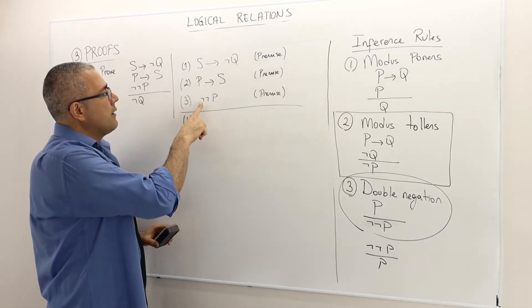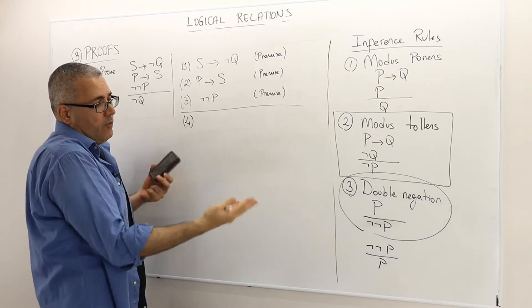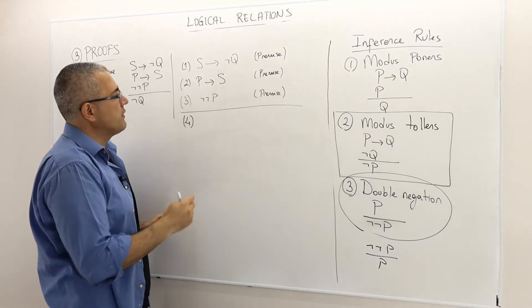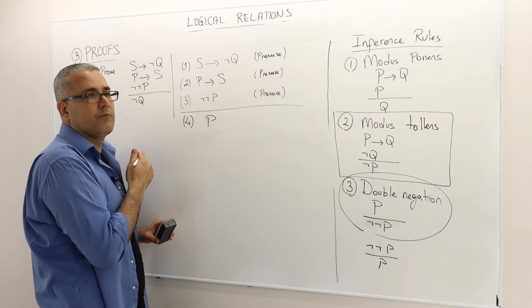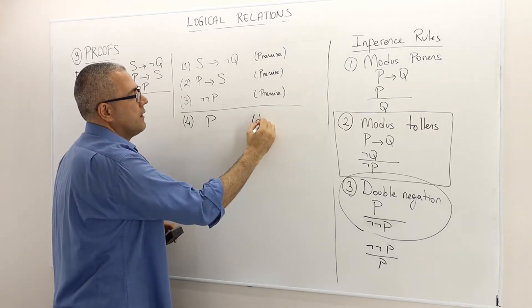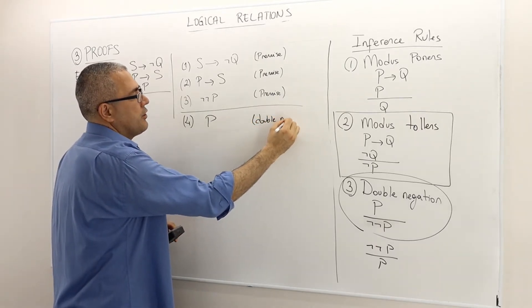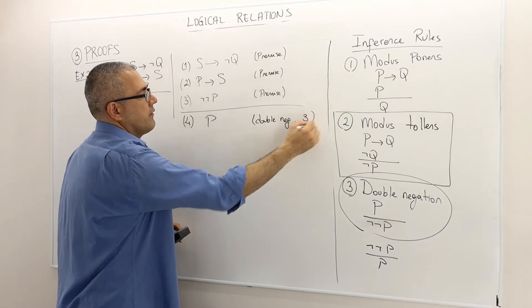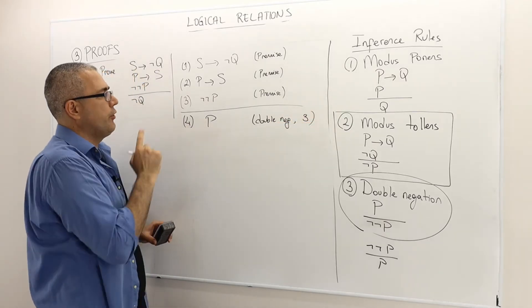Well, start with the simplest one. I think the double negation is the simplest rule, so not not P is equivalent to saying P. Alright, so this is double negation of the argument theory. So, P is true.